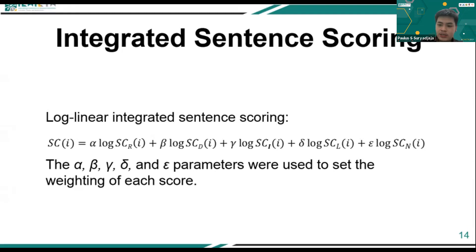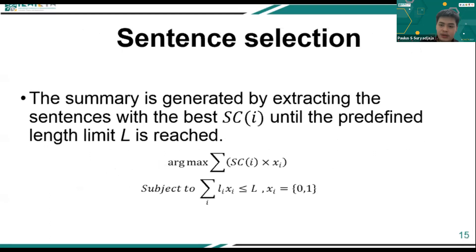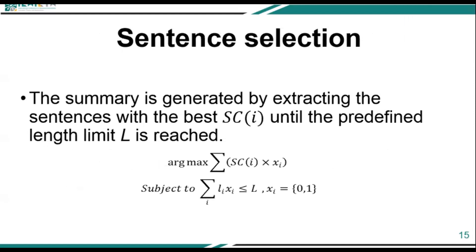The final score for every sentence is calculated using log-linear integrated sentence scoring. The alpha, beta, gamma, delta, and epsilon parameters are used to set the weighting of each score. A series of experiments is necessary to find the best configuration of these parameters. After computing the final score, the summary is generated by extracting sentences with the best final scores until the predefined length limit is reached. The selection of sentences for the summary is treated as a knapsack problem.